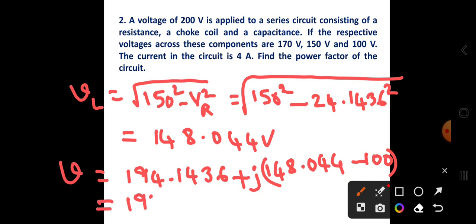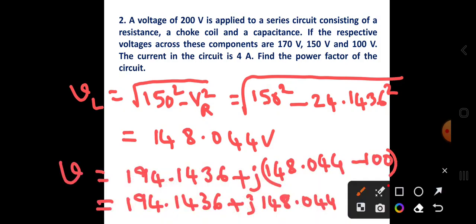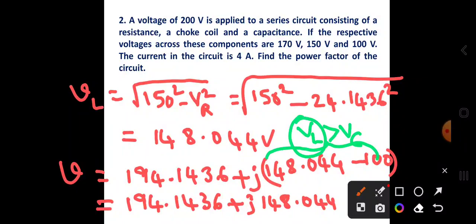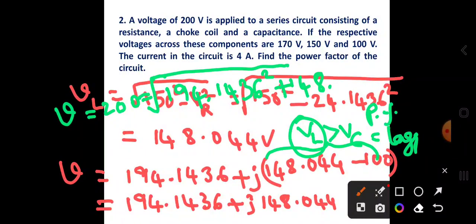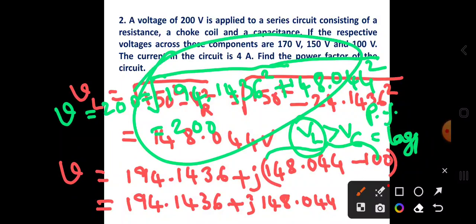We can verify this is correct: |V| = √(194.1436² + 148.044²). If you compute that, you will get exactly 200 volts, confirming our solution is correct. Also, since Vl is greater than Vc, the inductor is dominating the circuit, so the power factor will be lagging.